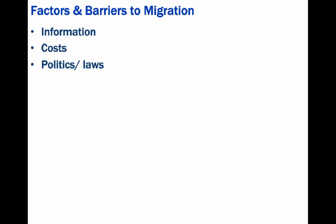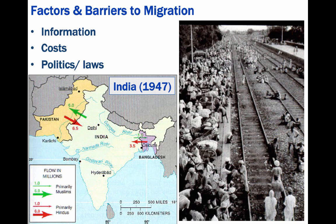Another factor or barrier to migration deals with politics or laws. If you're dealing with conflict such as a civil war, or a regime change — as in communism spreading to places like Cuba or Vietnam — or even immigration policies, these can affect migration. For example, in 1947, British India was partitioned into India, where the Hindu majority was, and Pakistan, where the Muslim majority was. At that time, Pakistan was on the west and on the east, and this resulted in the migration of 17 million people.